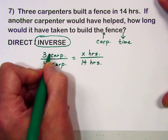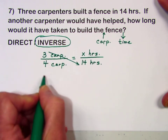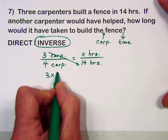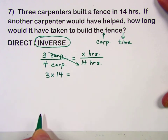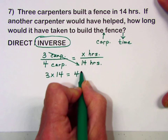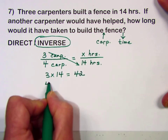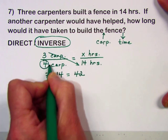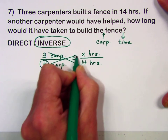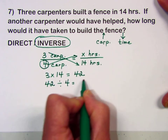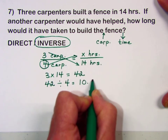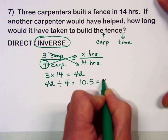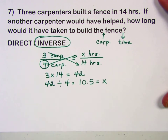Using the cross multiplication technique, we multiply the diagonal that has the two numbers: 3 times 14 gives us 42. That result is divided by 4 in the other diagonal, giving us 10.5 — the value of x. So it will take 10.5 hours.